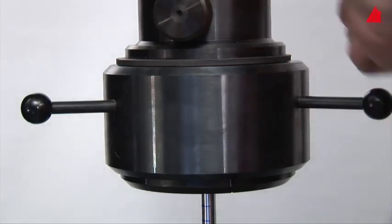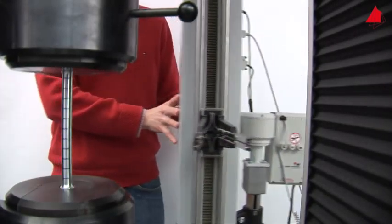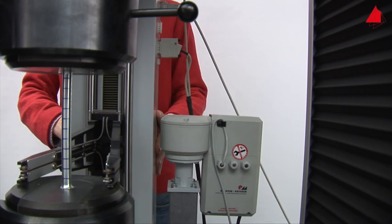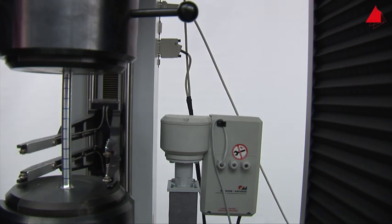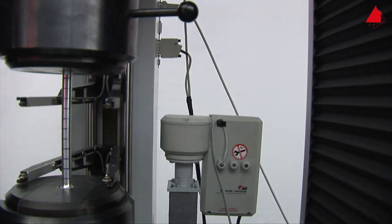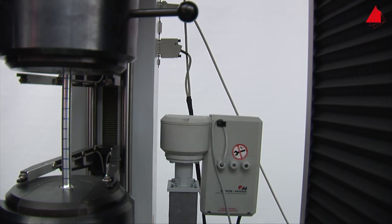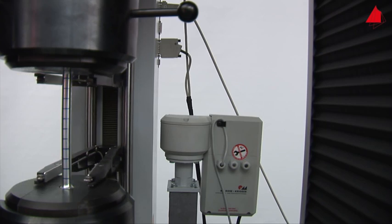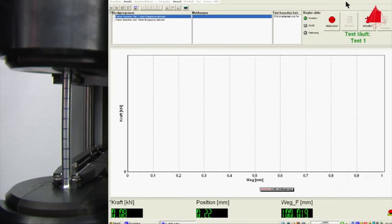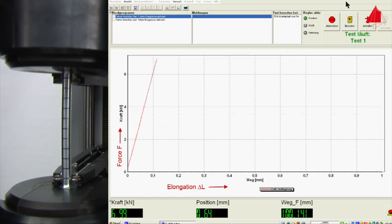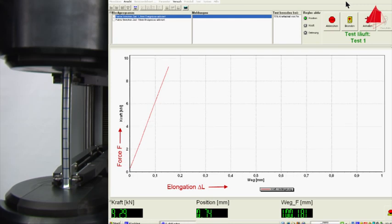It is cylindrical with an original diameter of 10 mm and an original gauge length of 100 mm. After fitting the test piece into the testing machine and panning the extensometer into its working position, the test can start. The initial linear curve in the force-elongation diagram again shows the elastic behavior of the material.